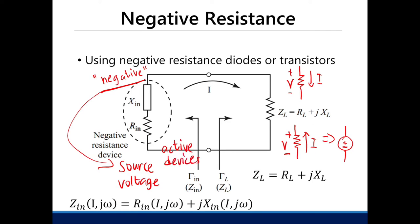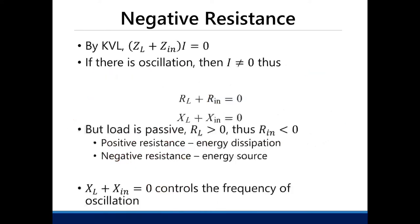This means that X-in and R-in will be a function of the bias current and the frequency of operation. By KVL using that circuit, when the equation equals zero, R_L plus R_in must equal zero and X_L plus X_in must equal zero. Since we're looking at the passive load, R_L will be greater than zero, so we need R_in to be less than zero — a negative resistance.